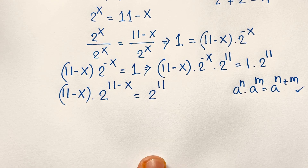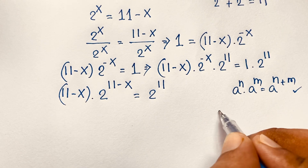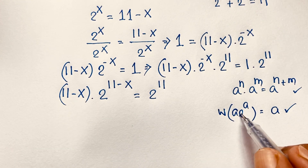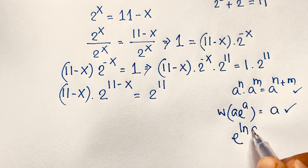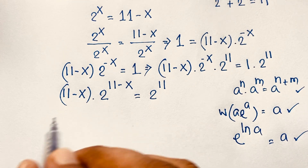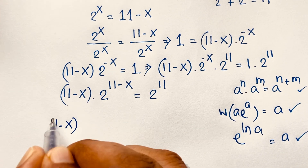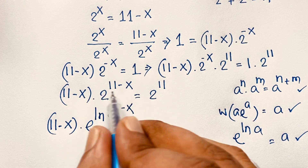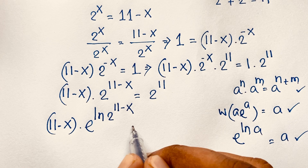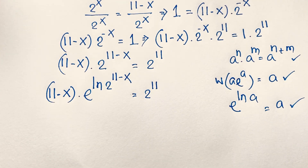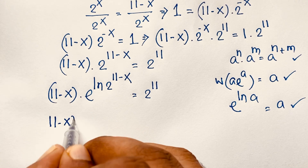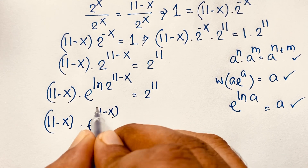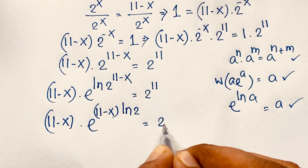Now, we have (11 minus x) and 2^(11−x). We know that e to the power of ln(a) equals a. Applying this formula, 2^(11−x) becomes e to the power of ln(2) times (11−x). So the expression becomes (11 minus x) times e to the power of (11−x) times ln 2, equal to 2^11. The exponent moves in front according to the natural log formula, giving (11−x) times ln 2.